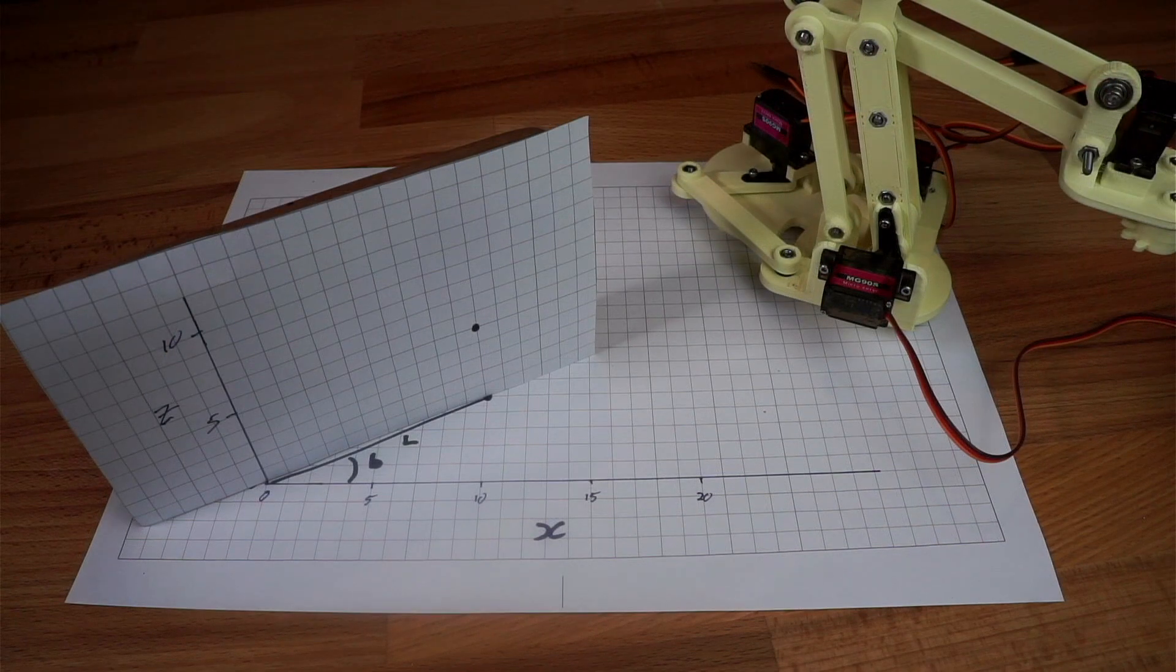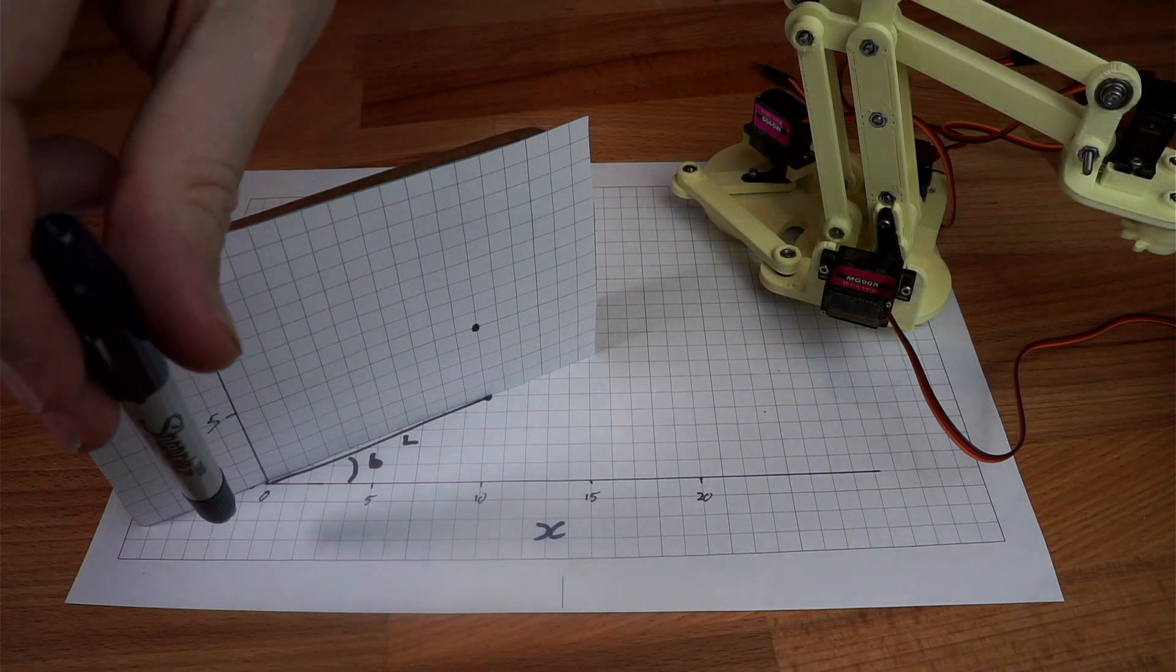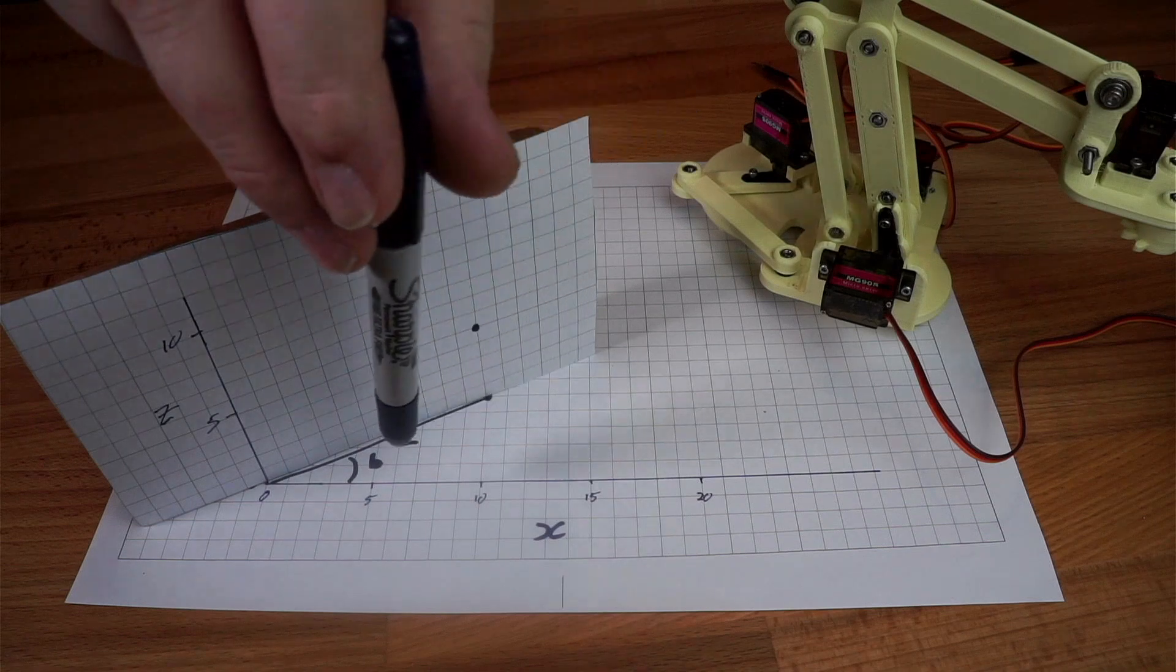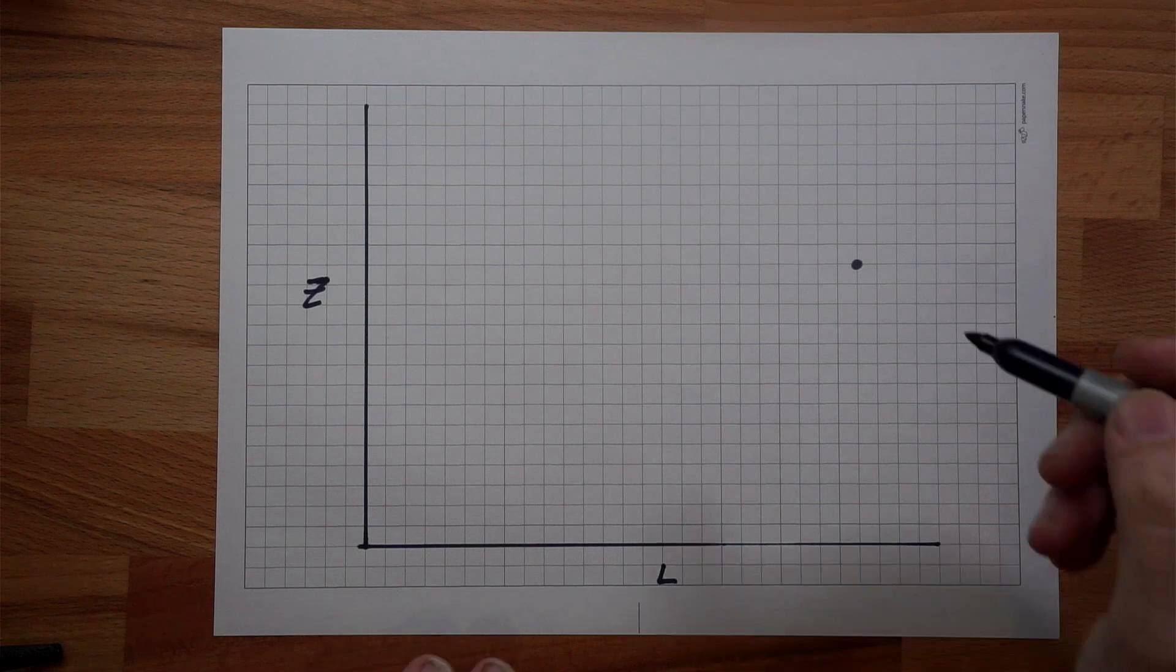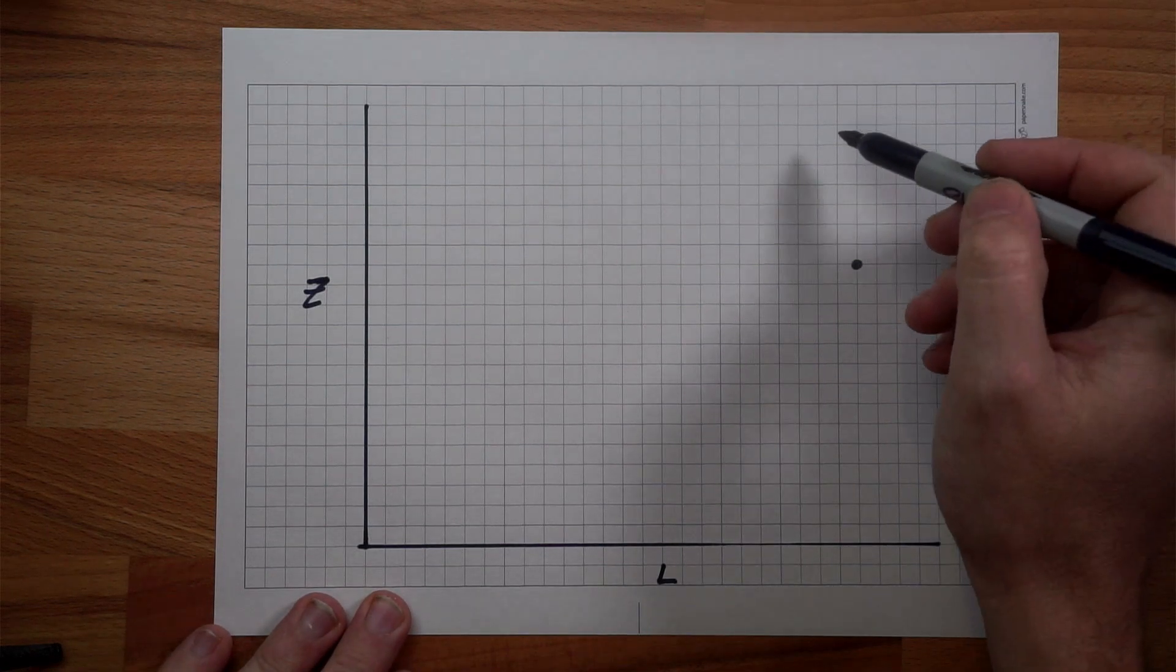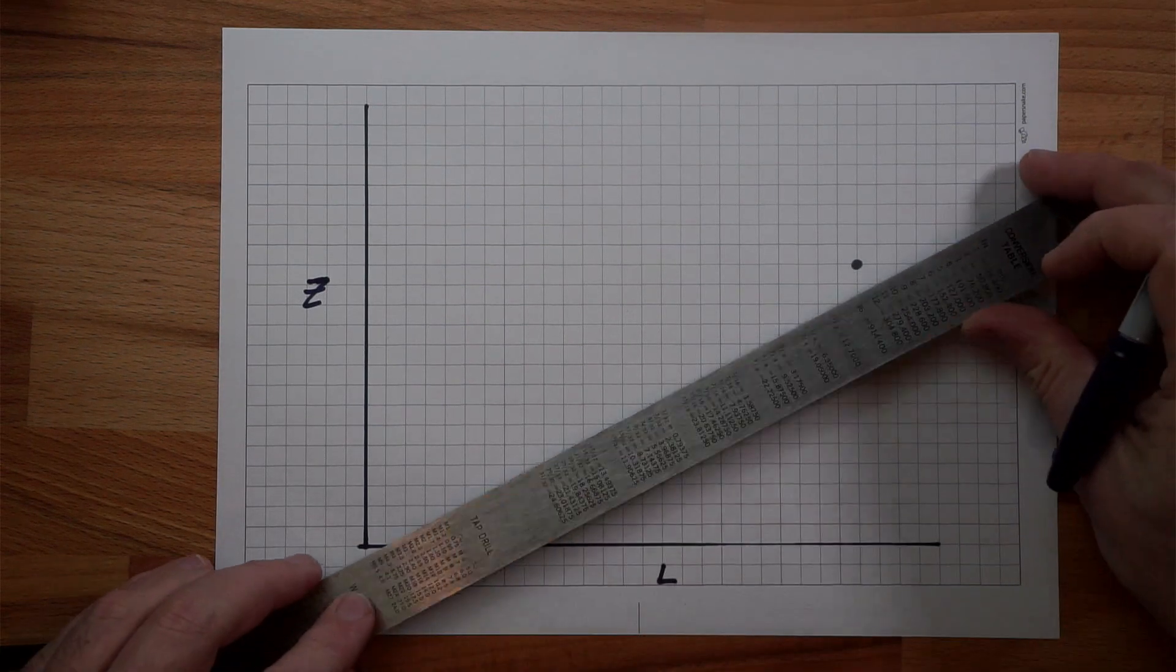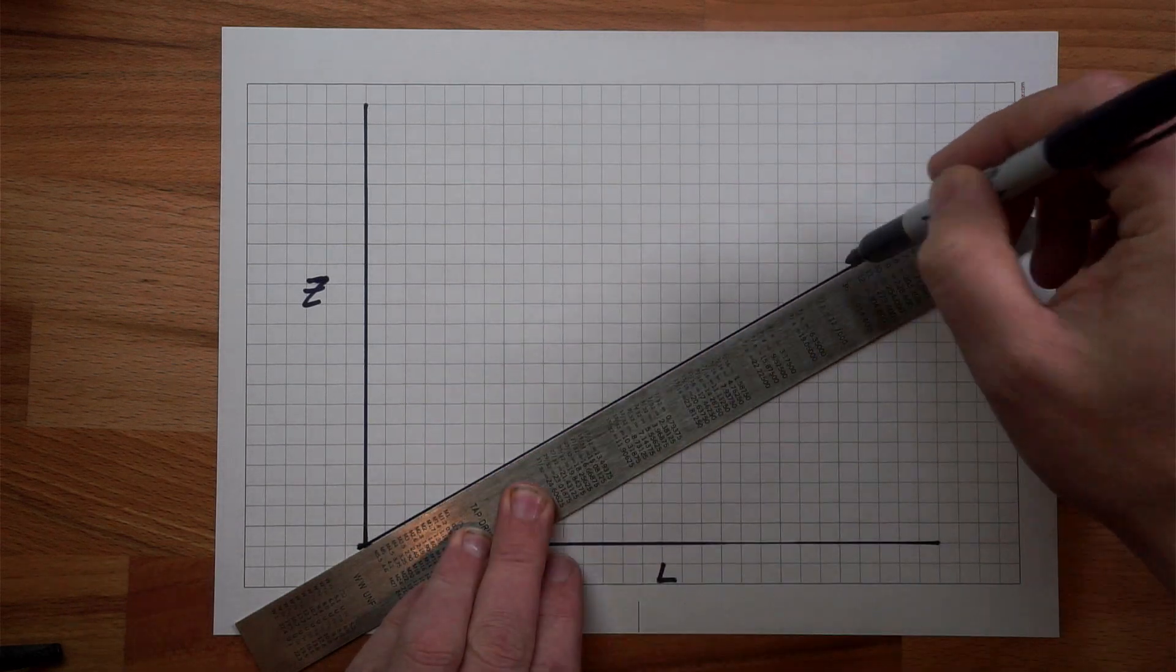Now that we've worked out the angle for the base we need to start considering the other arms. We can define a new plane here with z as one axis and the side L that we just worked out as the other axis. Here's the new plane taken onto a fresh piece of paper and here's our point that we want to move the robot arm to in relation to both the z axis and our new L axis. To keep things simple to start with we're going to pretend that we've got a single arm here instead of two arms.